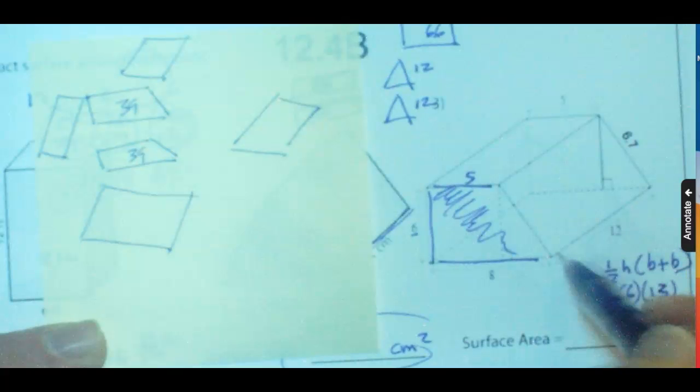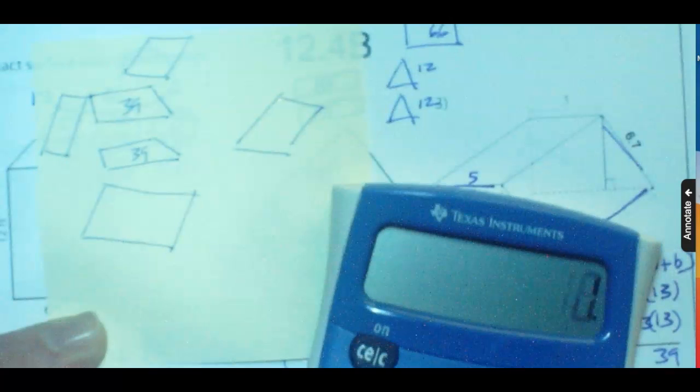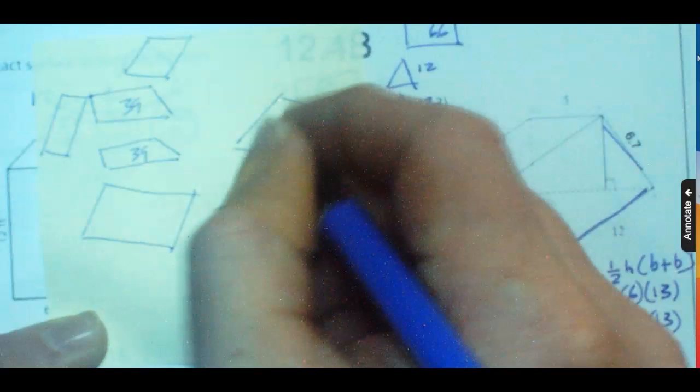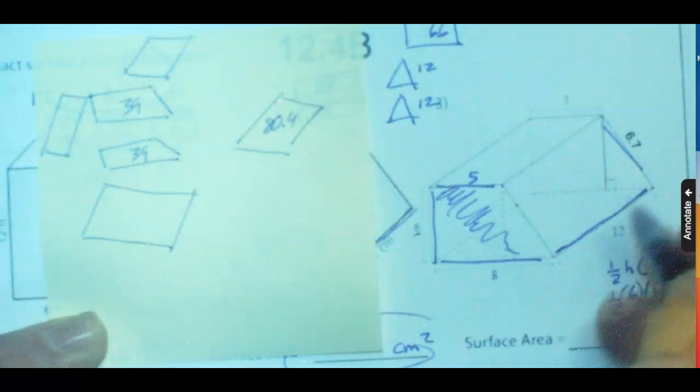Okay, so then this side is going to be 12 times 6.7. So let's take care of that. 12 times 6.7. That's 80.4. It's up here, 80.4. That shape right there. So we've got this one taken care of.